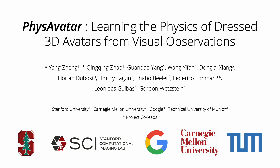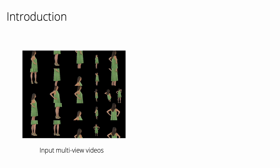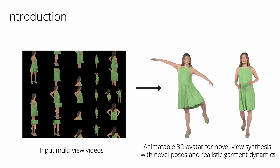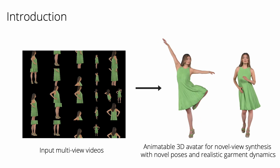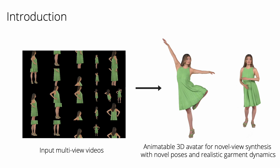We present PhysAvatar, learning the physics of dressed 3D avatars from visual observations. Given multi-view videos of a human subject, PhysAvatar is able to generate an animatable 3D avatar for novel view synthesis with novel poses and realistic garment dynamics.